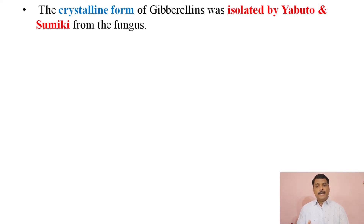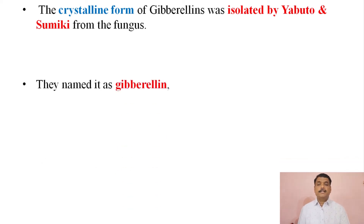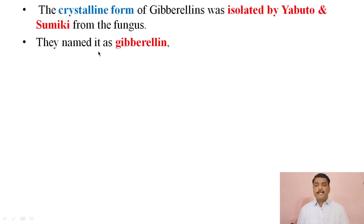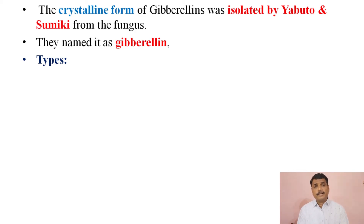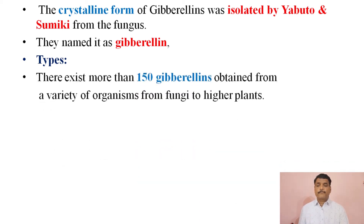They isolated and named it as a gibberellin. On the basis of their source, function, or chemical structure, there exist more than 150 gibberellins obtained from a variety of organisms, from fungi to higher plants.